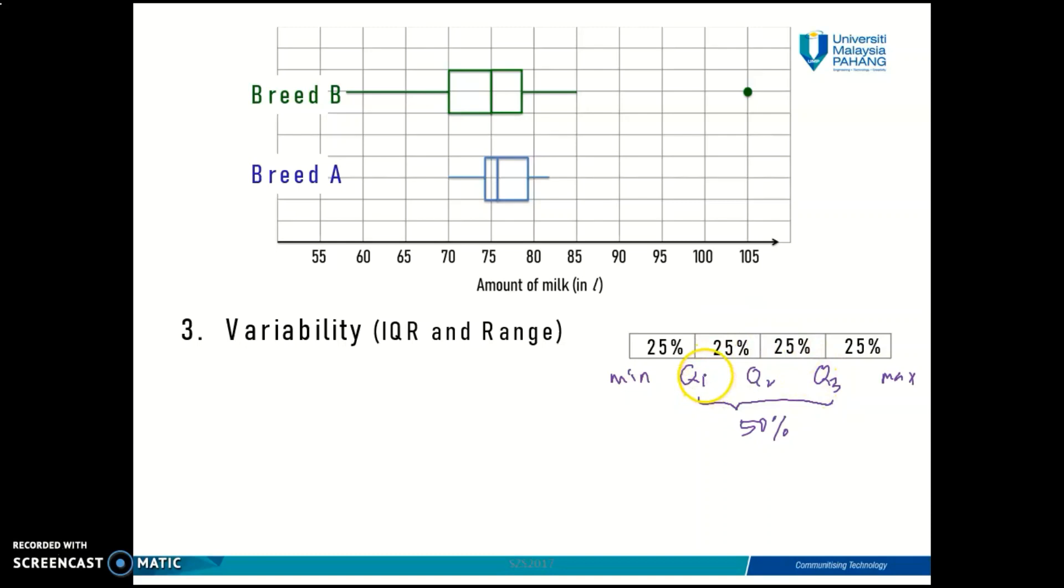Let's take a look at quartile one for breed B. It is 70 liter. And what about for quartile three? It's 78 liter. So now, you do understand that from quartile one until quartile three, there are 50% data in here, which means that for breed B, 50% of cows in breed B actually produces within 70 liter to 78 liter of milk in a month.